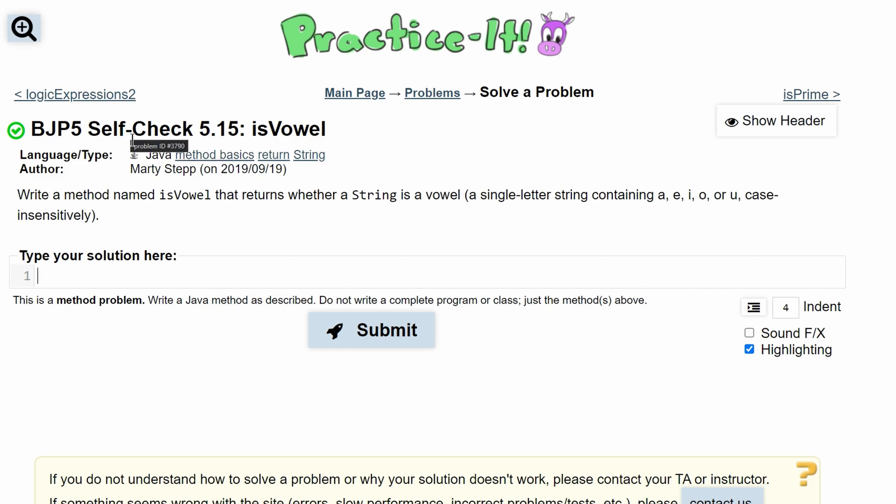For practice self-check 5.15 isVowel, we're asked to write a method named isVowel, a public static boolean, because we're returning whether a string is a vowel or not, so we need to have true or false. And in our parameters, we are taking a string, and we'll call it vowel.